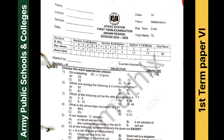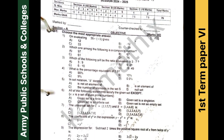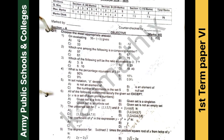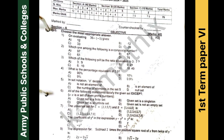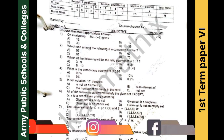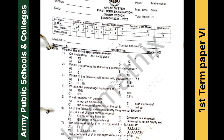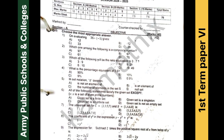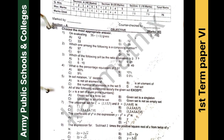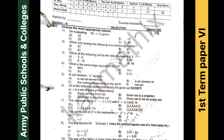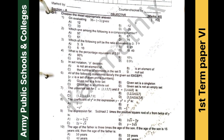Dear students, the marking scheme has already been shared with you — the link is available in the description box. Apart from this, there is a playlist on my channel for APS past papers, you can visit that playlist. This paper was of 75 marks and time given was three hours. Section A is 40 marks, Section B is 20 marks, and Section C is 15 marks.